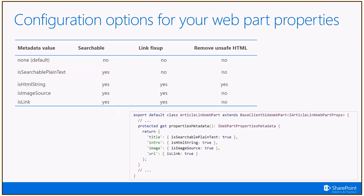From a configuration perspective, in your code you can use the propertiesMetadata override where you define additional metadata for your properties. In the example on the slide, we have four different properties: title, intro, image URL, and link. We're adding metadata information for specific properties: title is marked as isSearchablePlainText, intro is marked as isHtmlString, image is marked as isImageSource, and URL is marked as isLink. If you define no metadata, your property values are not searchable.